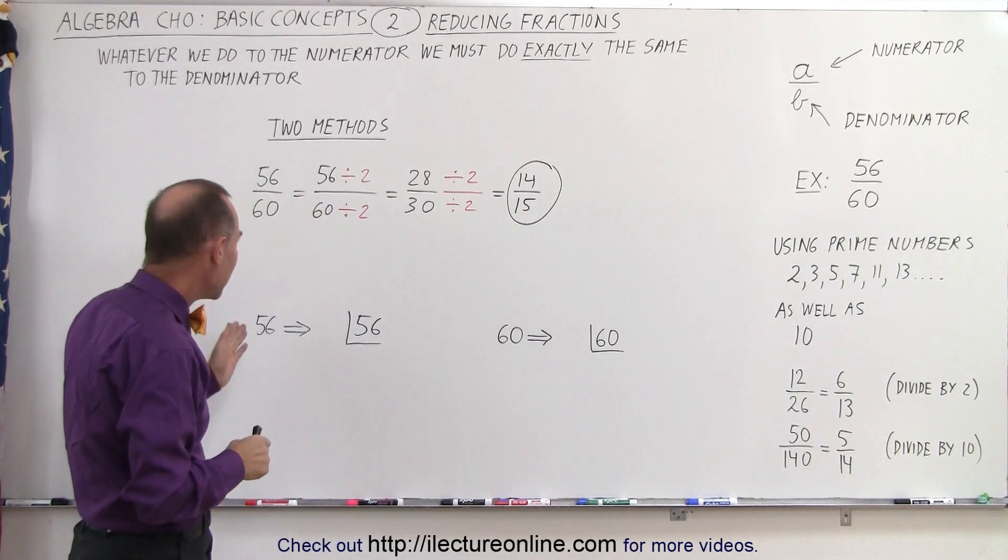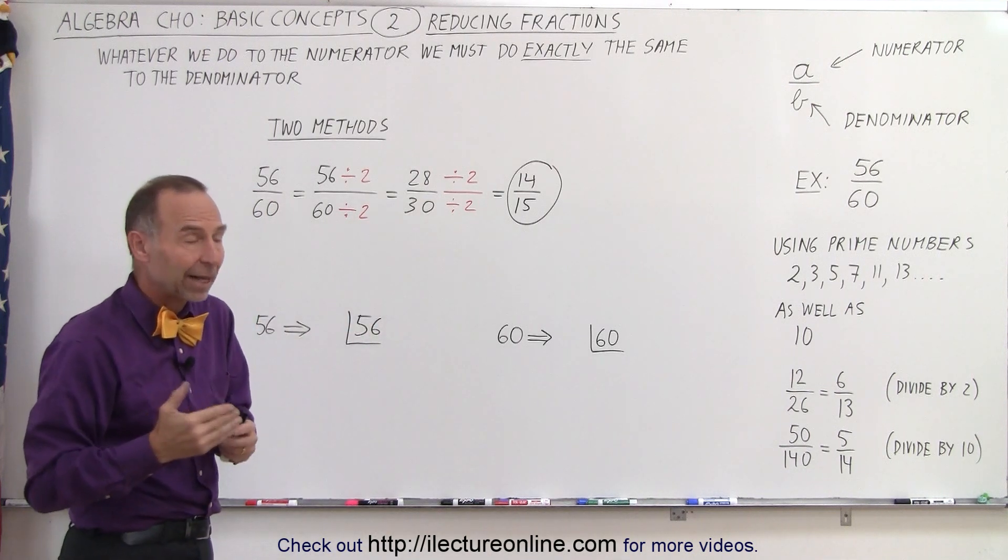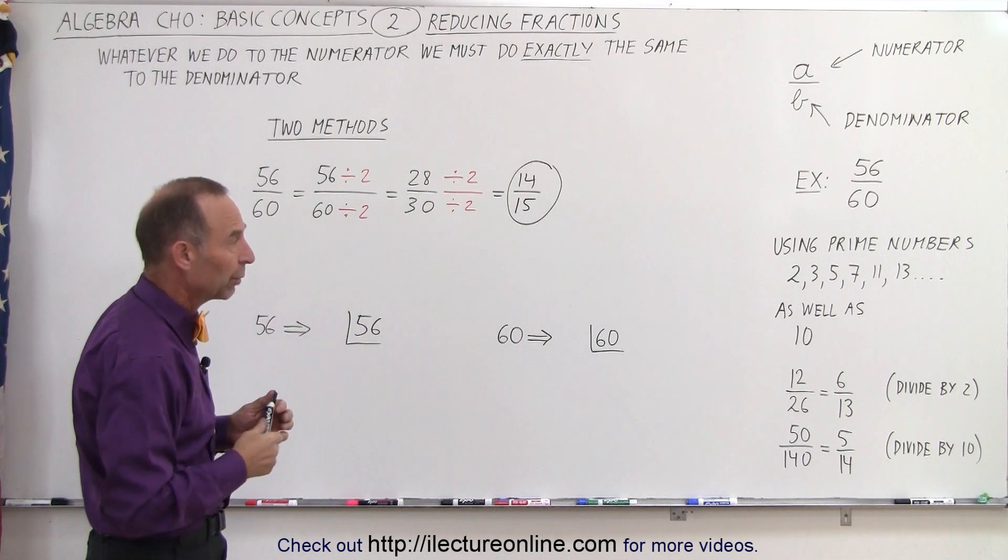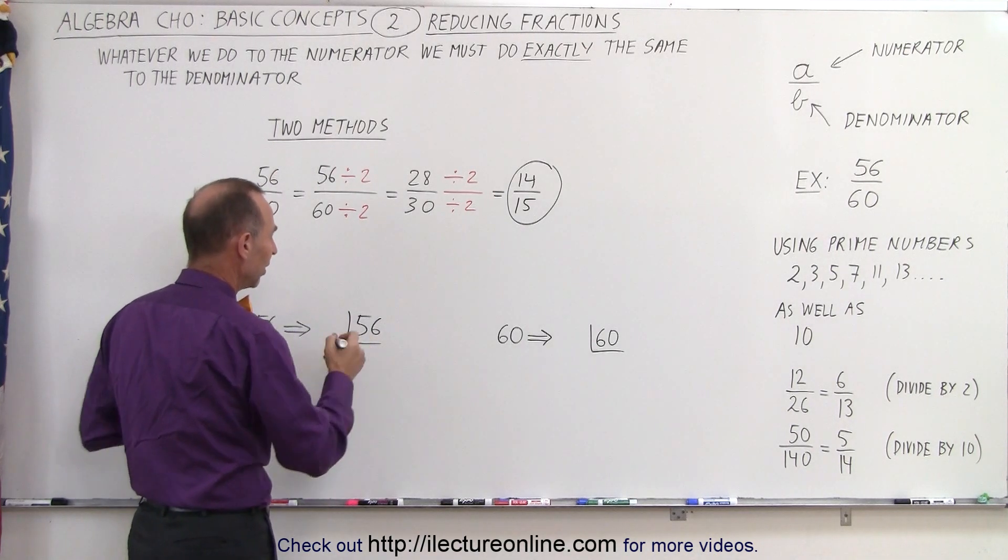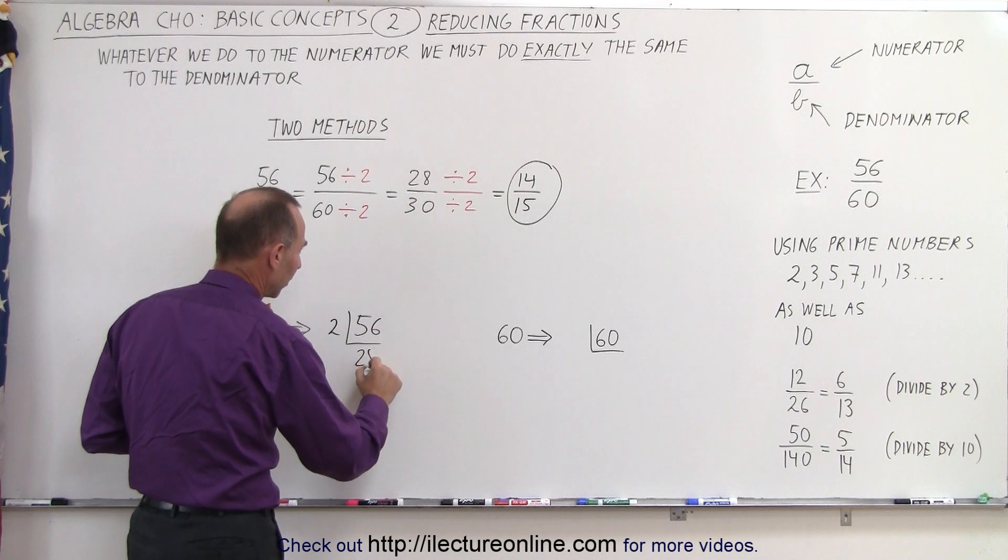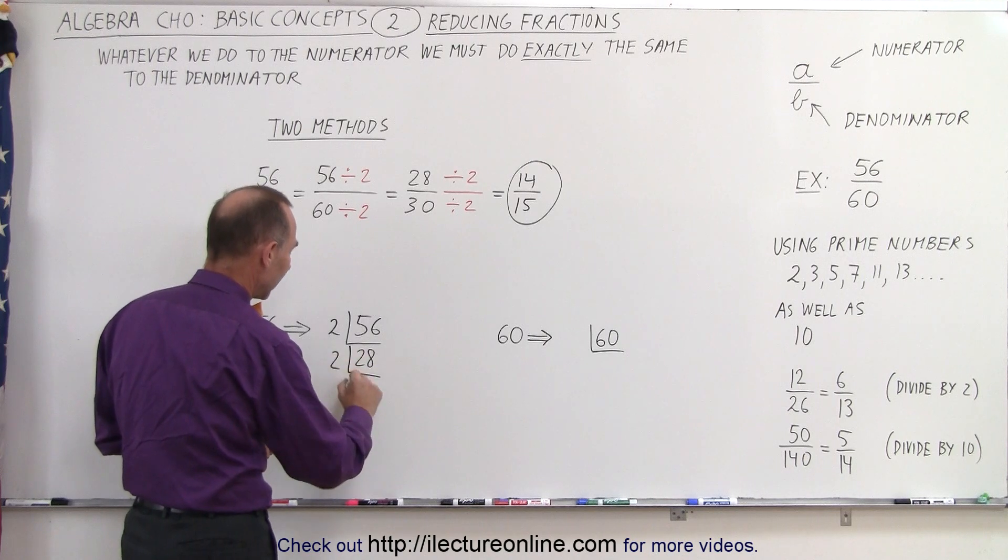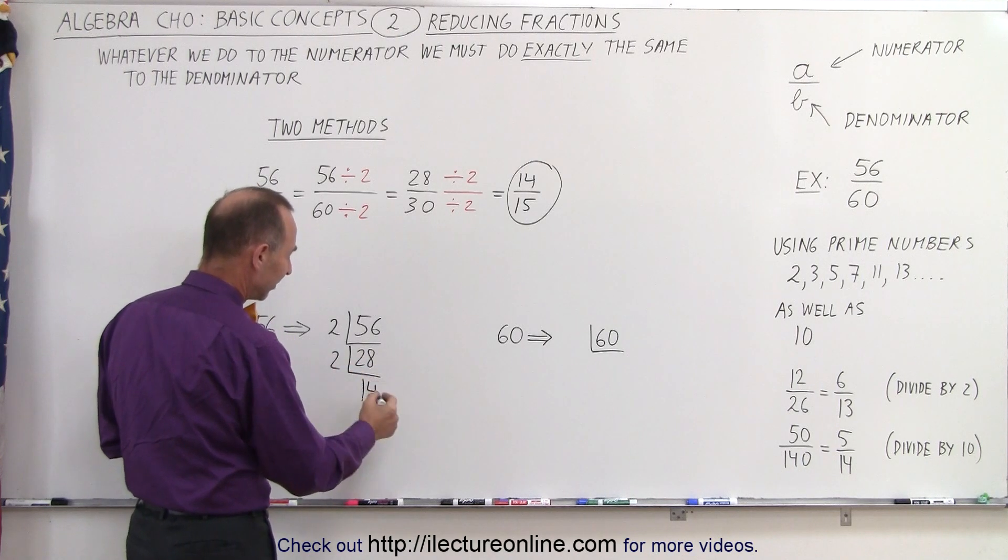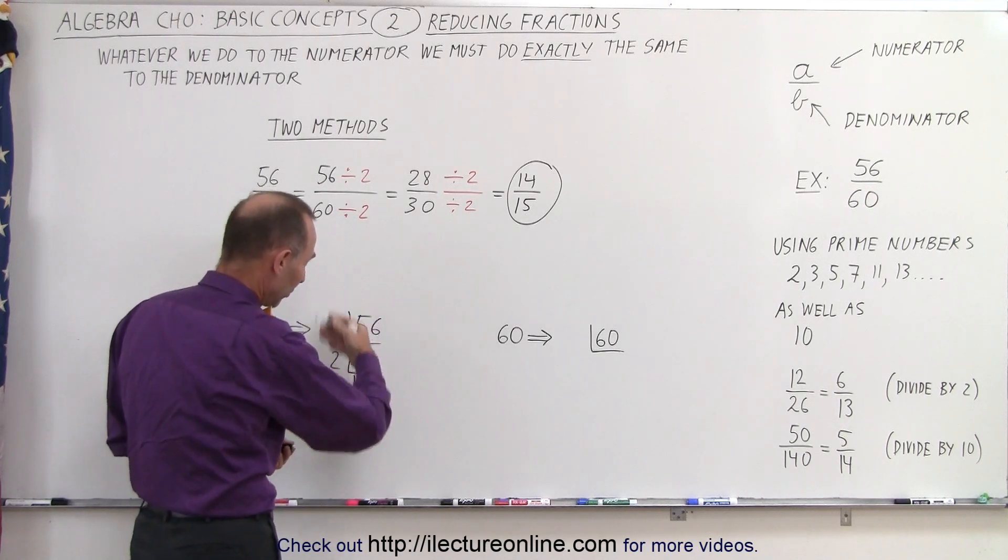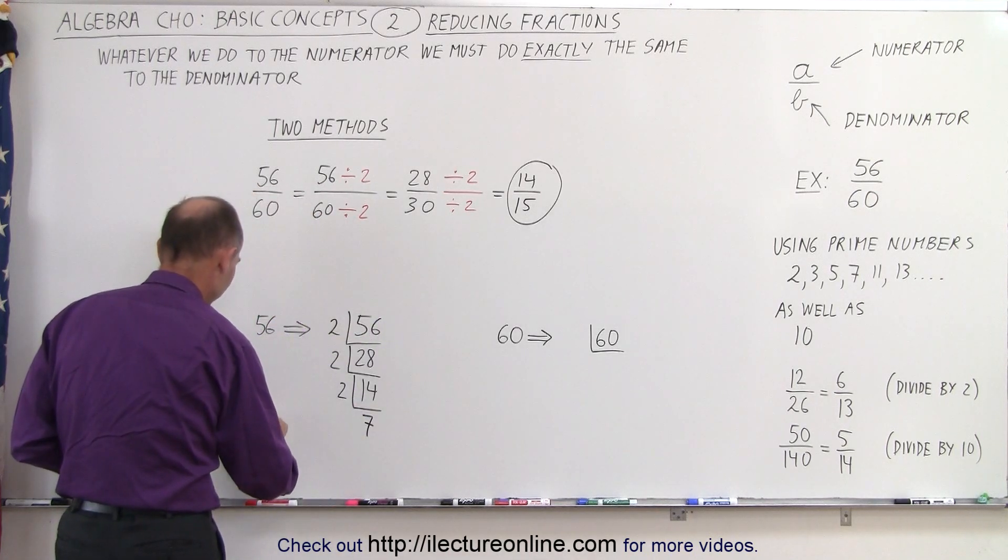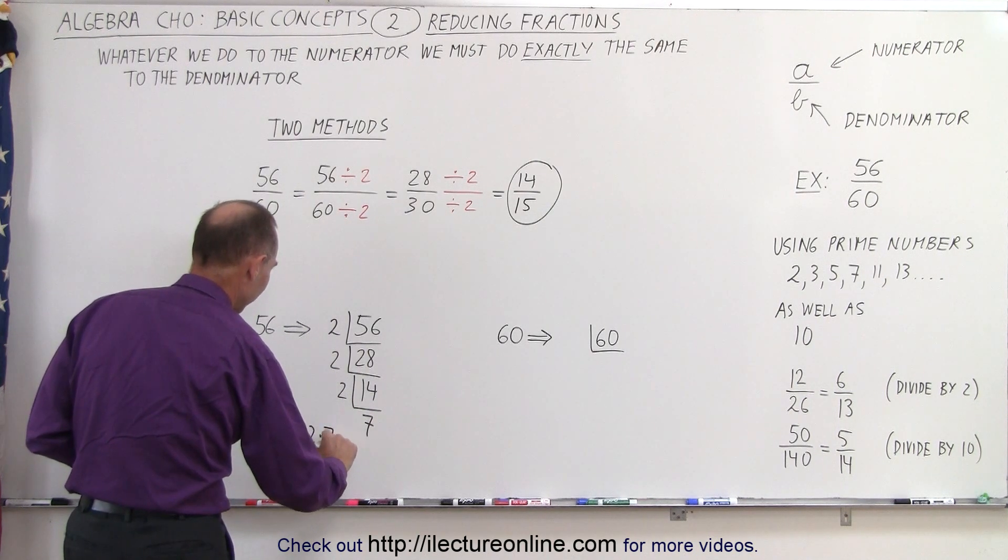Another thing we can do is take each number separately and divide it by all of the prime numbers as many times as we can, starting with the smallest prime number and working our way up. Since 56 is even, we can divide it by 2, and then we get 56 divided by 2 is 28. That's still even, so we can divide it by 2 again. We get 14. It's still even, so we can divide it by 2, and we get 7. And since 7 is a prime number, we are done. So that means that 56 can be written as 2 times 2 times 2 times 7.